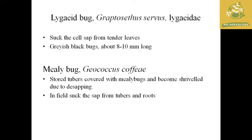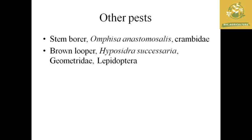The next pests are the lygaeid bug, which comes under the family Lygaeidae, and the mealy bug with scientific name Geococcus coffeae. Both insects suck sap from the tender leaves. The mealy bug also affects stored tubers, desapping the proteins and resources present in them. It is said to be a serious pest in both field and storage conditions.